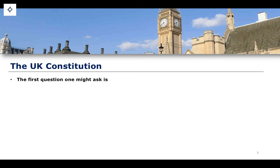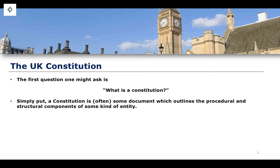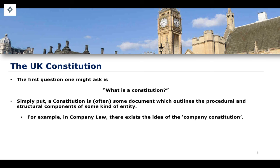What is a constitution? Simply put, a constitution is often some document which outlines the procedural and structural components of some kind of entity. That sounds quite vague and broad, and the reason why is because a constitution does not necessarily have to refer to the constitution which governs a state, like the UK constitution. You can have a constitution within corporations — in company law, there is this idea of a company constitution, which is the document outlining the procedural and structural elements of a company.